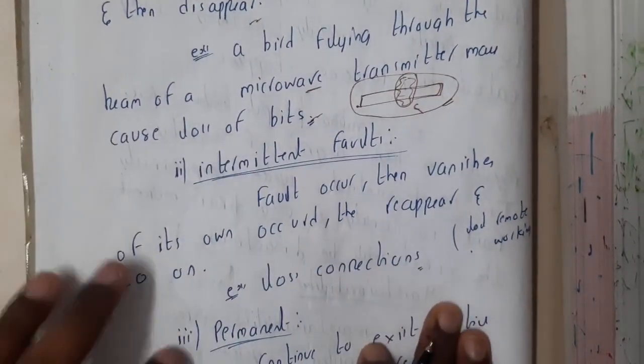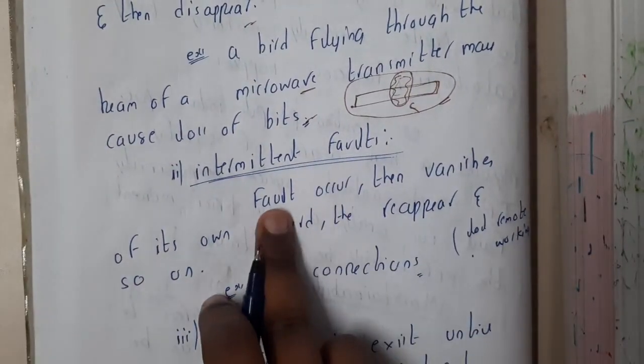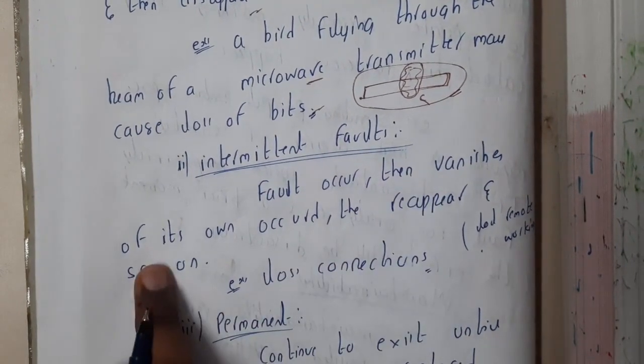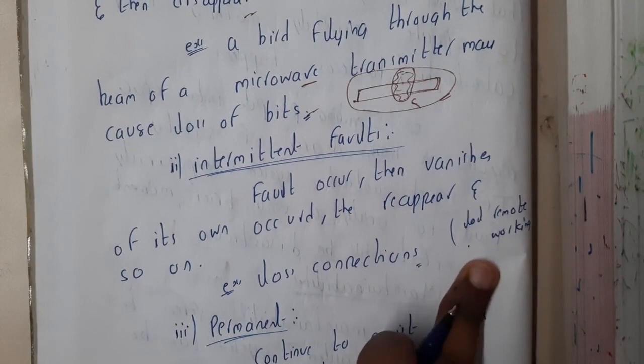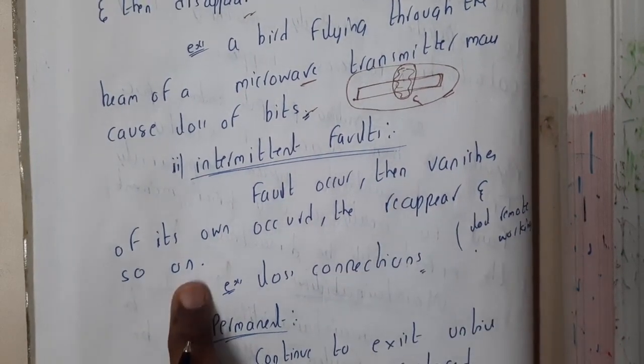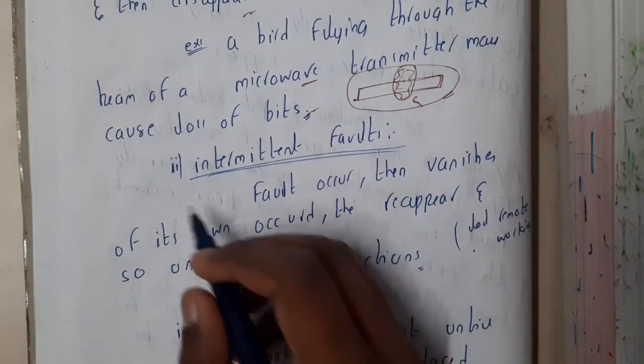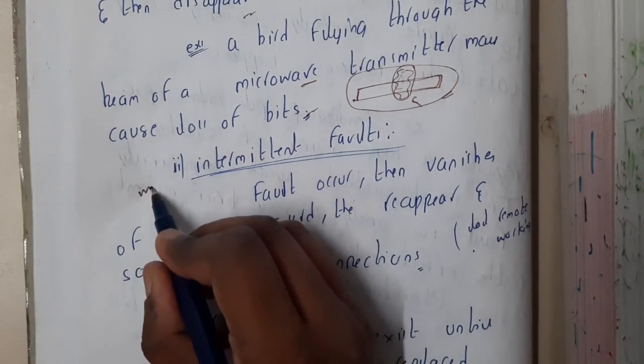Similarly, intermediate fault - the fault occurs, then vanishes on its own, occurs, then reappears again. Basically some kind of loose connection - it will work for some time, then stops working, and after some time it will start working again.